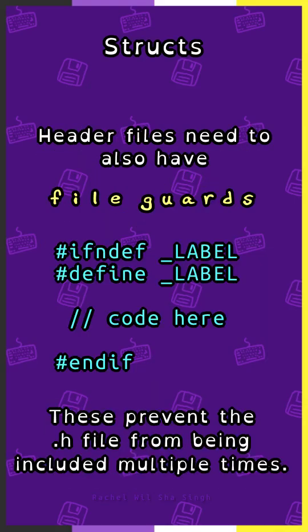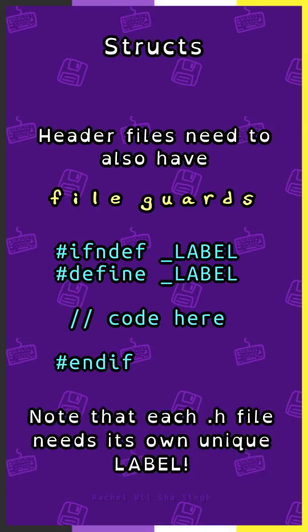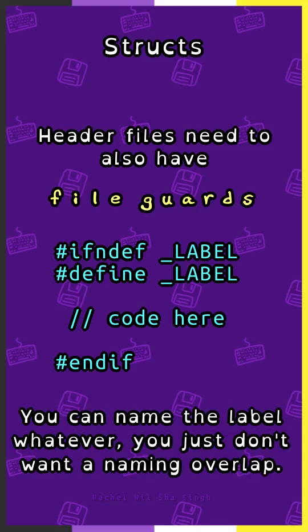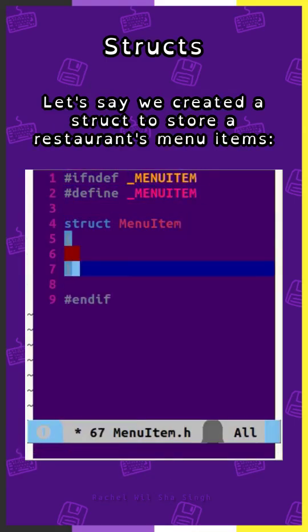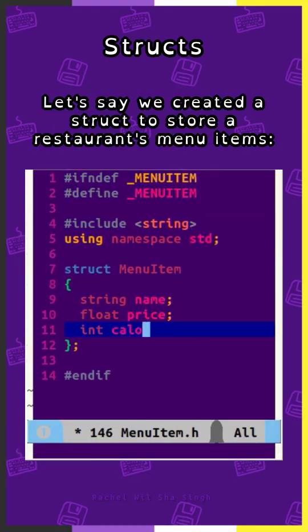Header files also need file guards, such as #ifndef LABEL, #define LABEL, and #endif at the very end. We add our code in between these — they prevent the .h file from being included multiple times. Note that each .h file needs its own unique label; you can name it whatever you want, just don't have naming overlap.